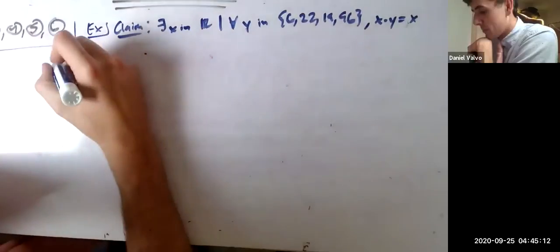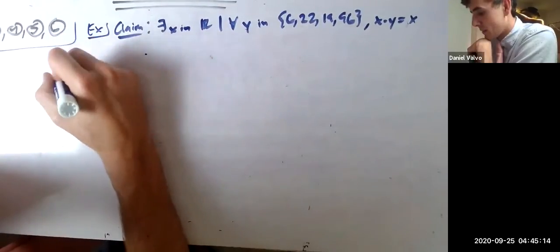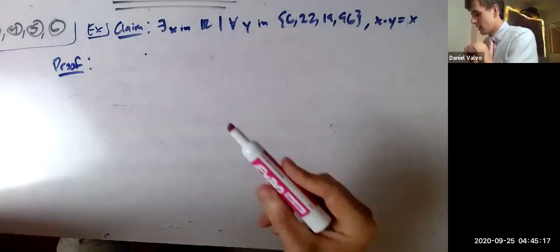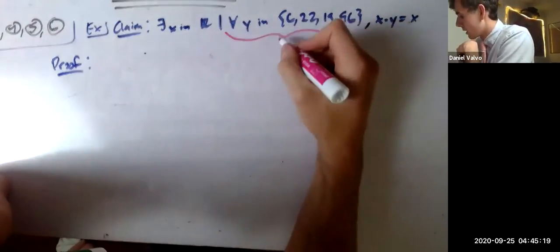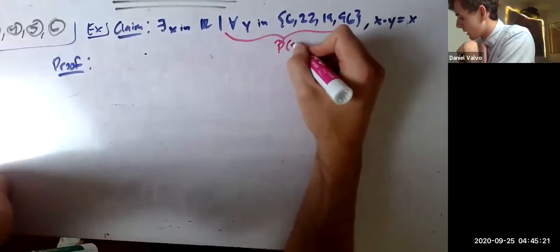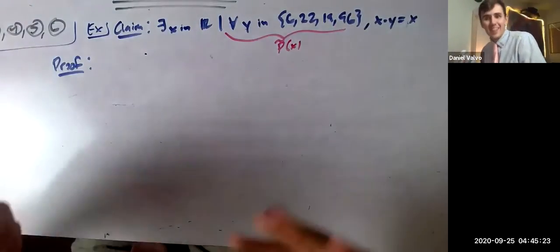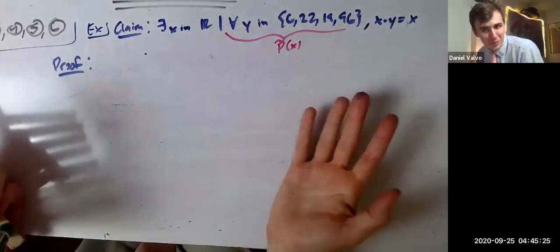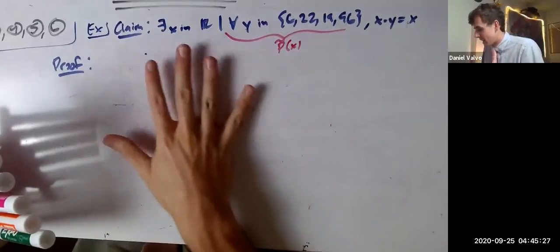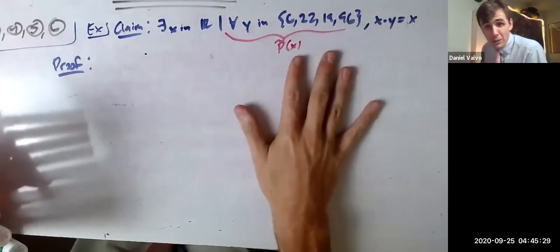So the way you prove this is, we're just going to call this p squiggly of x. So this is a there exist statement, right? This is the exact same as before. So this is an existential statement where the predicate happens to be a for all statement.